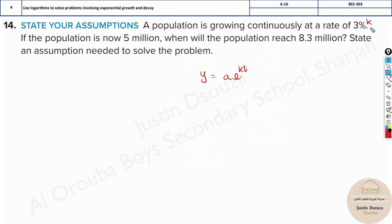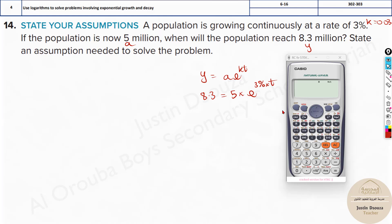And k is 3%. You can directly put 3% in the calculator or write it as 0.03 as well. The initial population a is 5 million. The final population we want is 8.3, that is y. And the time is what we need to solve for. You can just write 8.3 equals 5 times e to the power kt, which is 3% times t. Now, we can put this directly in the calculator and solve.